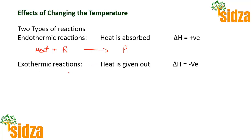In an exothermic reaction, heat is given out, so delta H is negative. When the reactants convert into the products, heat is released by the reaction. So we can write the heat on the product side: reactants → products + heat.